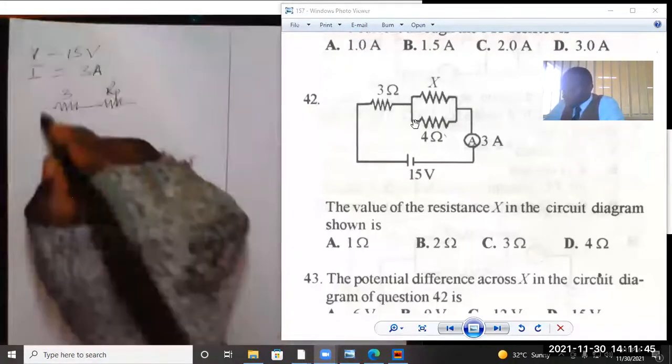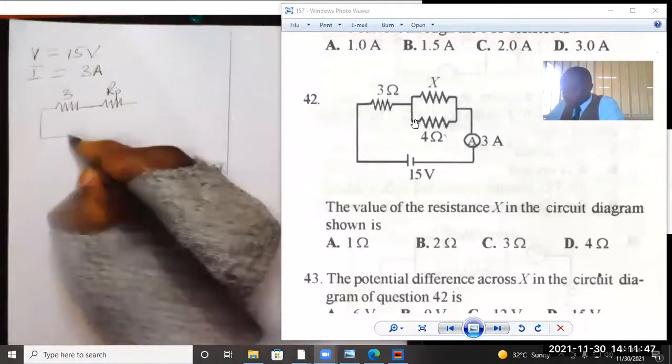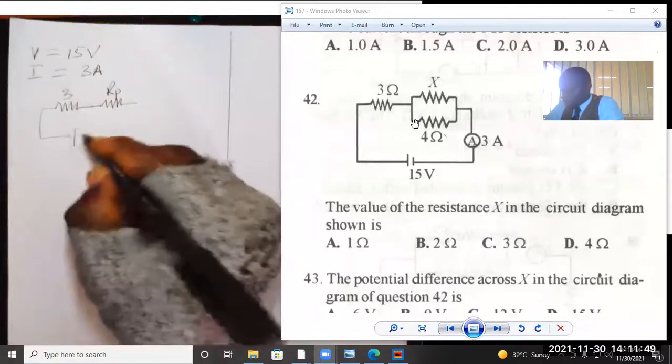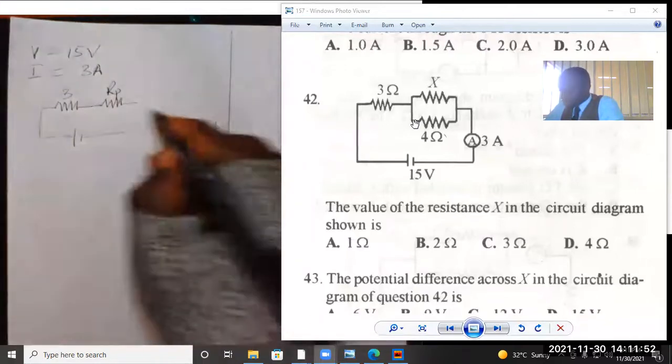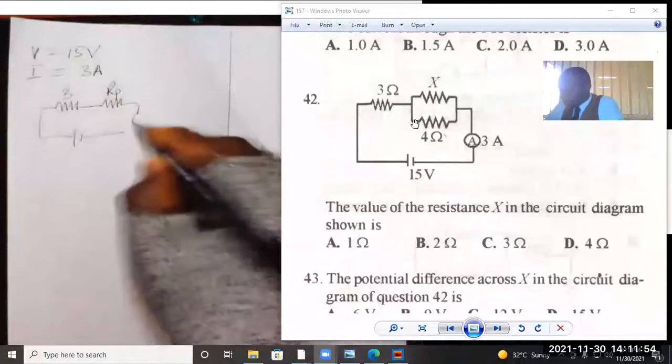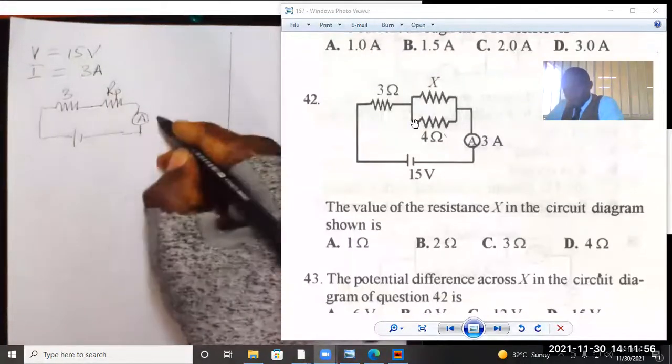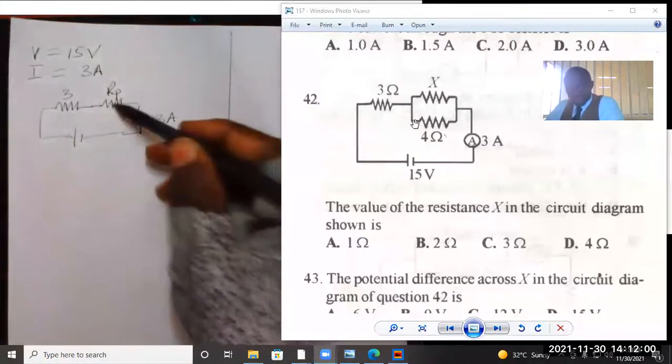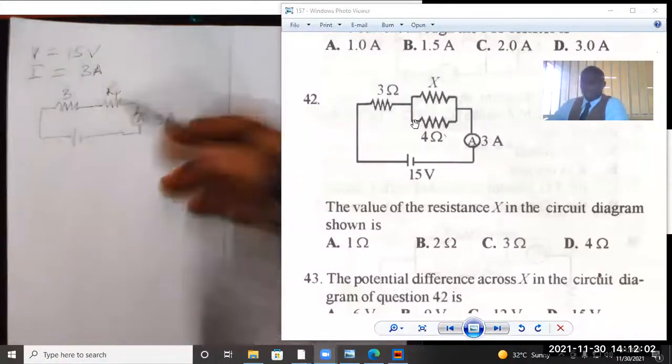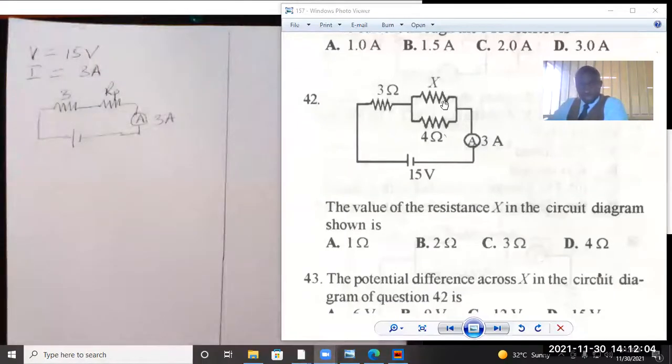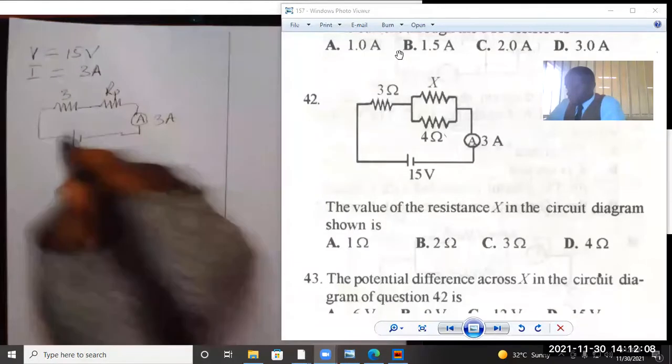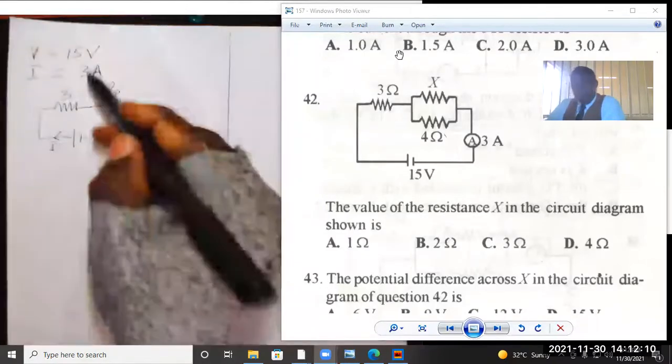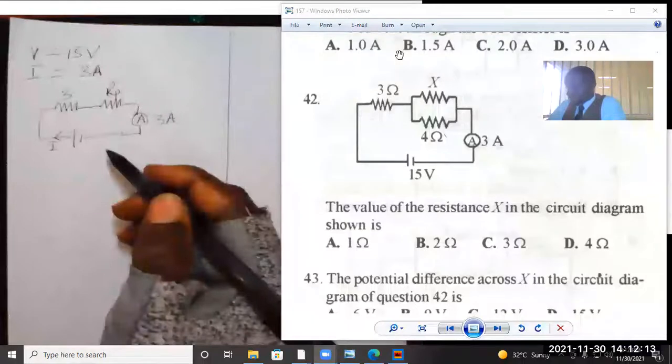Then the second diagram will take this shape. This is the ammeter, reading 3 amperes. This resistor is the effective resistance of these two resistors in parallel. The current that flows in the circuit is 3 amperes. Let's find the total resistance of the circuit.